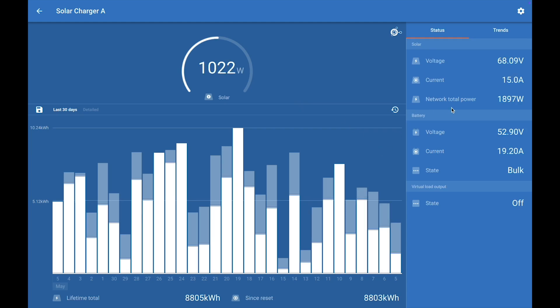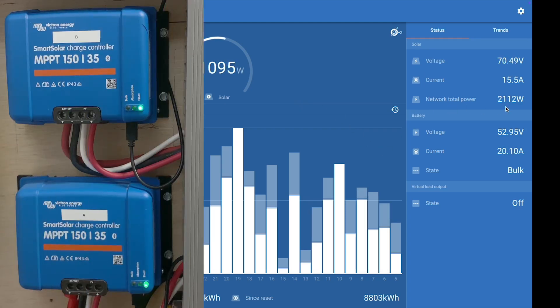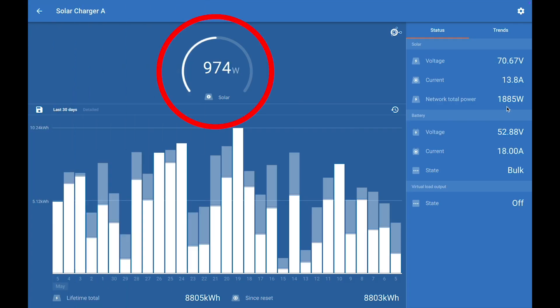So, this is looking at the Victron app. I have two Victron chargers, and this is showing the first array, my charger A. But, if you look over here, we can see the total of both of my arrays and both chargers showing up here on this network total power.